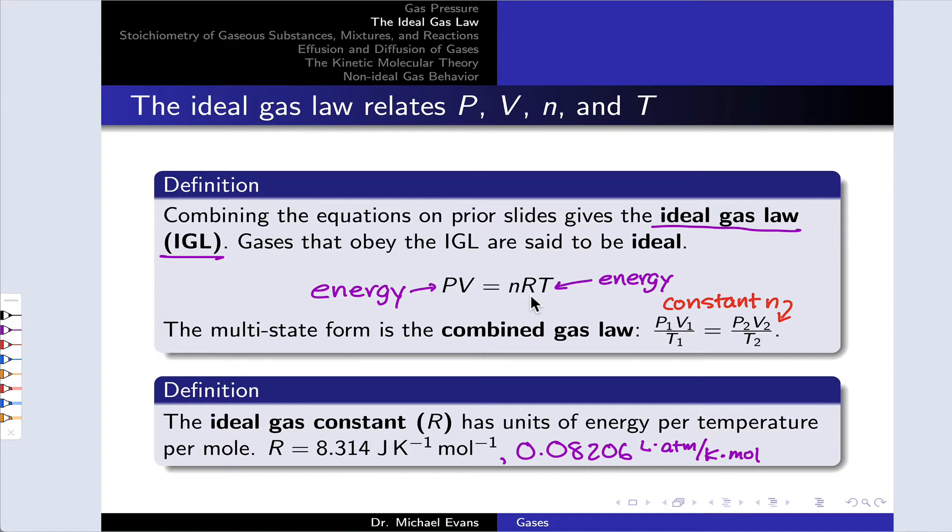So the ideal gas constant is an energy per temperature per mole. That is important to appreciate conceptually because we've seen those units in the context of entropy. Energy per temperature is the units of entropy, and R can be thought of as a kind of molar entropy, as an entropy per mole. There's a deep idea there that relates to chemical thermodynamics and how we think about entropy.